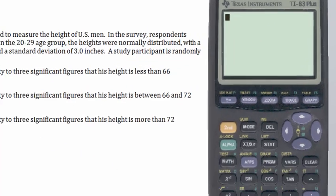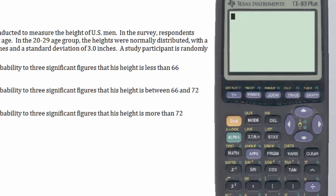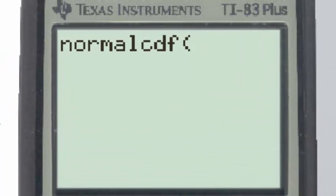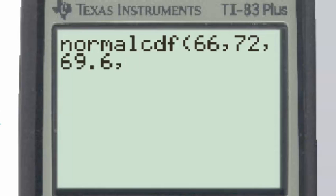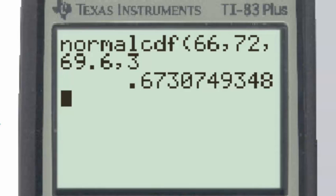The third method of doing this problem, again, involves the normal cumulative density function, which we get to by clicking second, distribution, two. But this time, the input will be the raw scores, 66 and 72, which will then be followed by the mean and standard deviation of this normal distribution, which are 69.6 and 3. When we hit enter, we obtain the same result as we did in the first two methods.